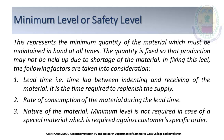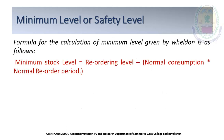The minimum level, also called the safety level, is the level below which the stock should not be allowed to fall. If the stock falls below this level, there is a chance of stoppage of production. The formula for minimum stock level is: Minimum Level = Reorder Level minus (Normal Consumption multiplied by Normal Reorder Period).